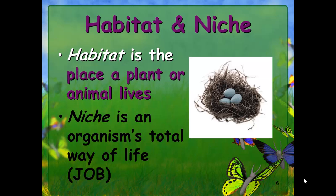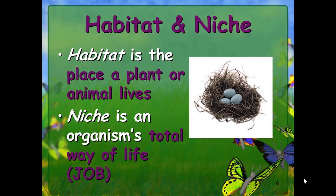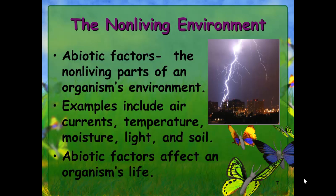A couple key words we're going to need to know are habitat and niche. A habitat is simply the place a plant or animal lives — kind of like its home. Niche — some people also pronounce it 'nitch' — is an organism's total way of life. It's its role or job, what it does in its environment.